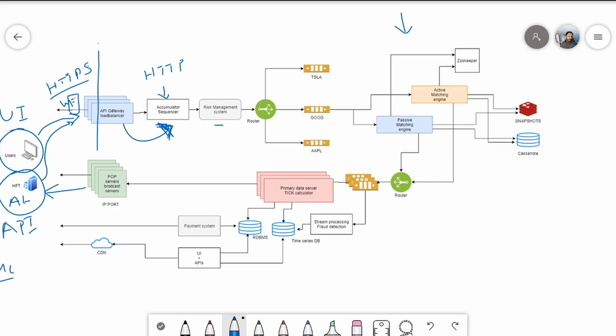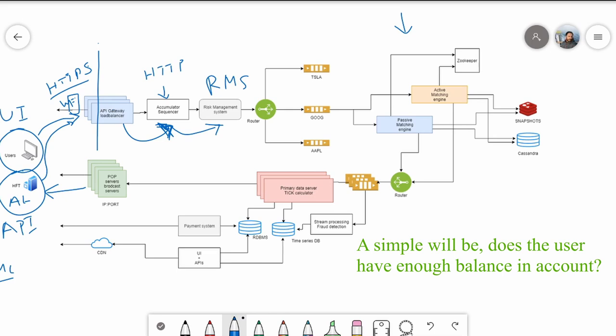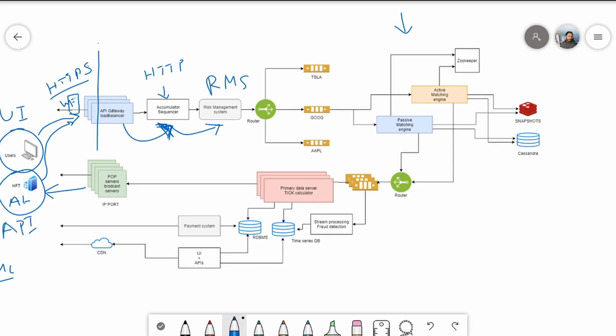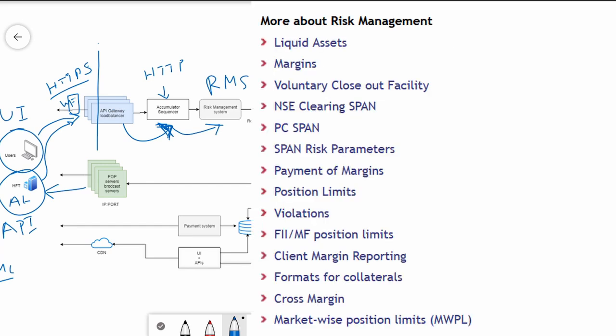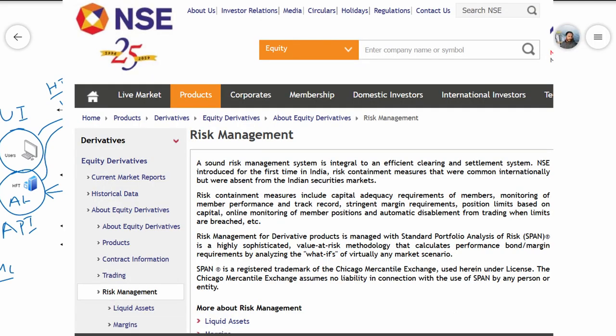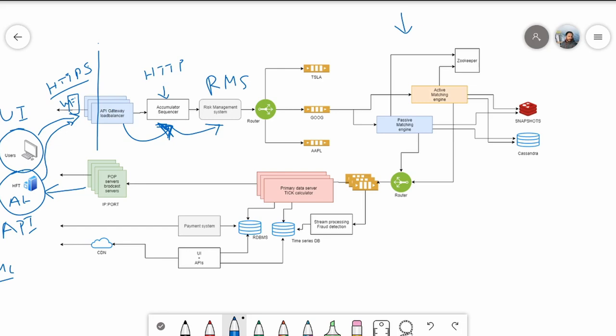The order information is then sent to the Risk Management System (RMS). The RMS ensures the order is safe to enter into the system by performing checks against predefined parameters such as price, size, and capital limits. There are many risk management checks that any stock market applies to each order. Links to read more will be posted in the description.